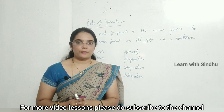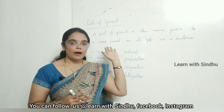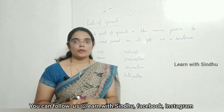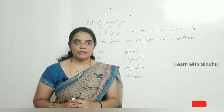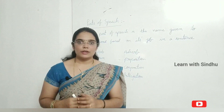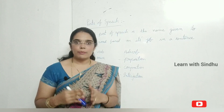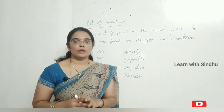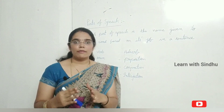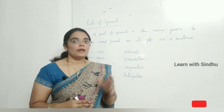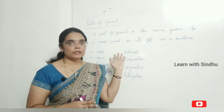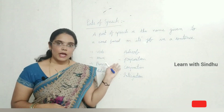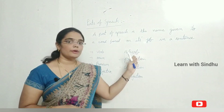First of all, what is a part of speech? A part of speech is the name given to a word based on its job in a sentence. A word will be a verb, a word will be a noun, a word will be a pronoun, a word will be an adjective. There are eight parts of speech: verb, noun, pronoun, adjective, adverb, preposition, conjunction, and interjection.